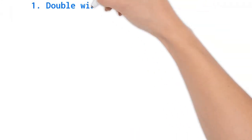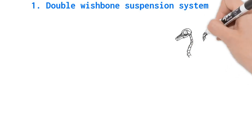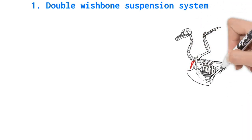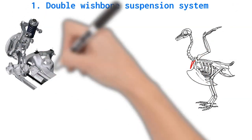Double wishbone suspension - the name is constructed by using the word wishbone. Wishbone is the name of the foot bone between the neck and breast of a bird. Control arms used in this suspension have similar shape like the wishbone of a bird.